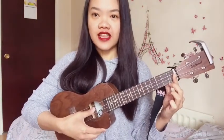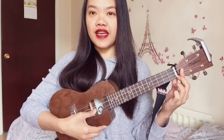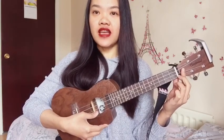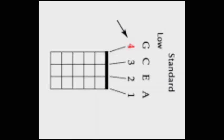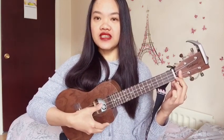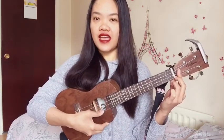Namely, the first string from the top is called open string G. The next one is open string C. And then the third is open string E. And the last one is open string A. So the strings of the ukulele are namely G, C, E, and A.